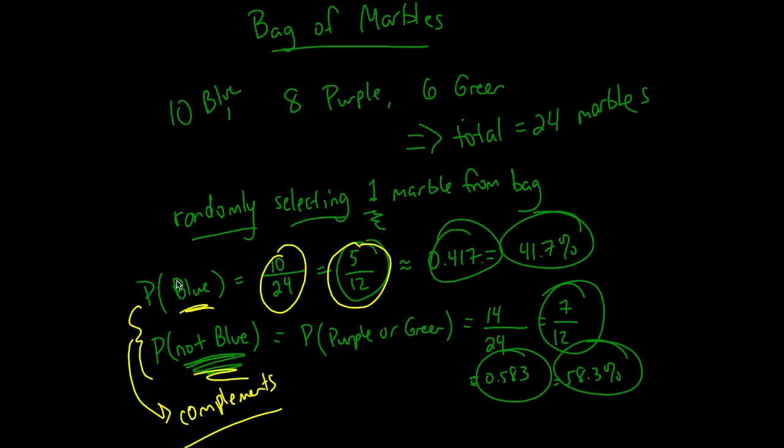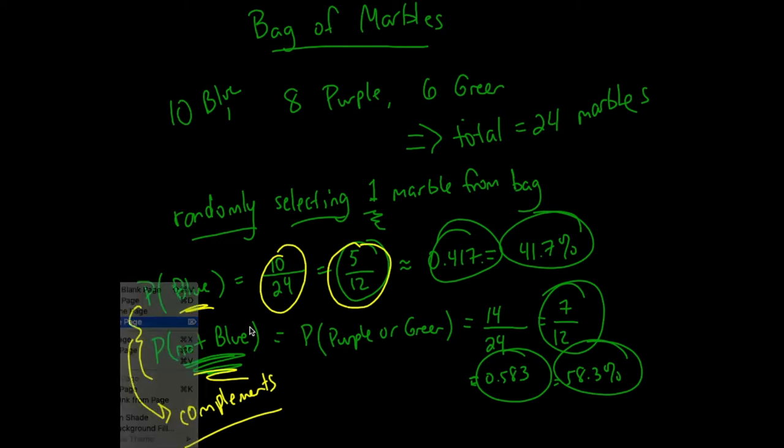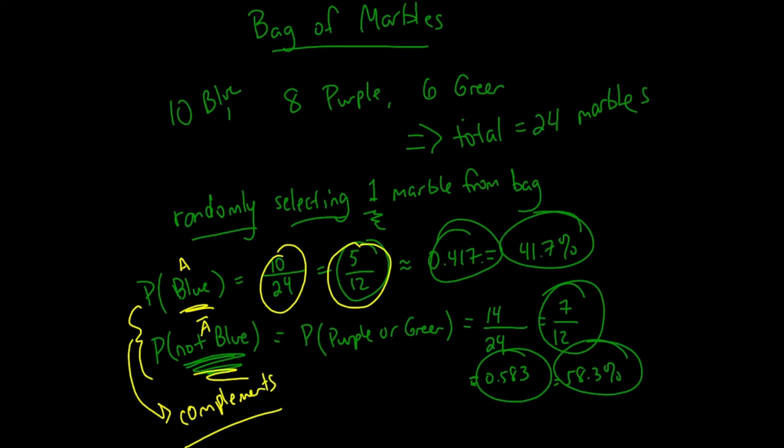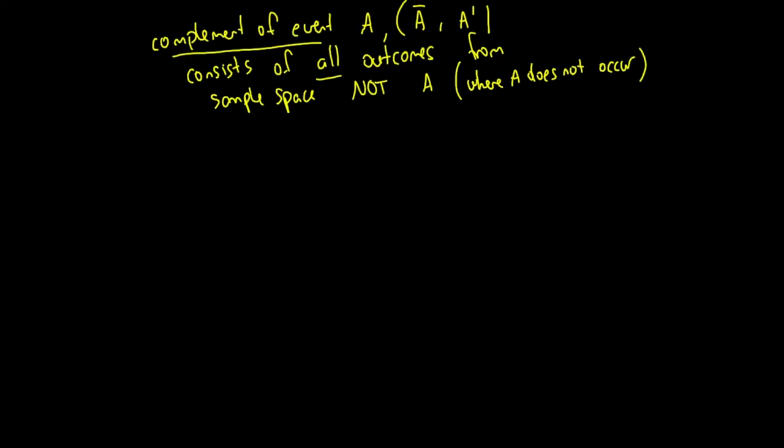If probability of getting a blue marble were event A, the probability of not a blue would be A complement. Represents it that way. That's a very important concept for you to understand because you're going to see it used a lot later.